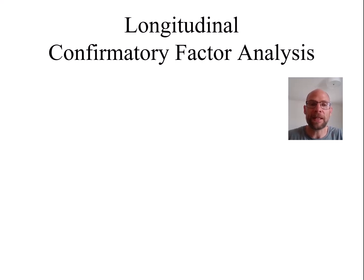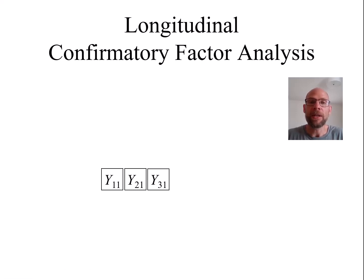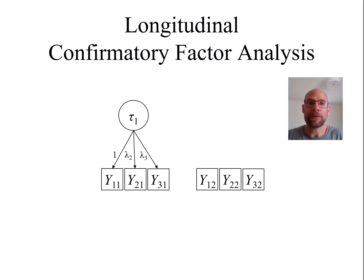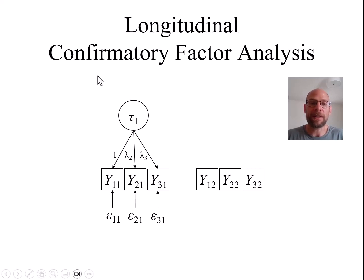Here I'm going to focus on a very basic model for multiple indicator data. Let's assume that we have three indicators or observed variables — for example, for measuring subjective well-being — at the first measurement occasion, and then the same three indicators again at a second time point. In a longitudinal confirmatory factor analysis model, we would then have a latent factor that represents true inter-individual differences in subjective well-being at time point one, which is the common true score variable. There is also measurement error reflected in the indicator-specific epsilon variables.